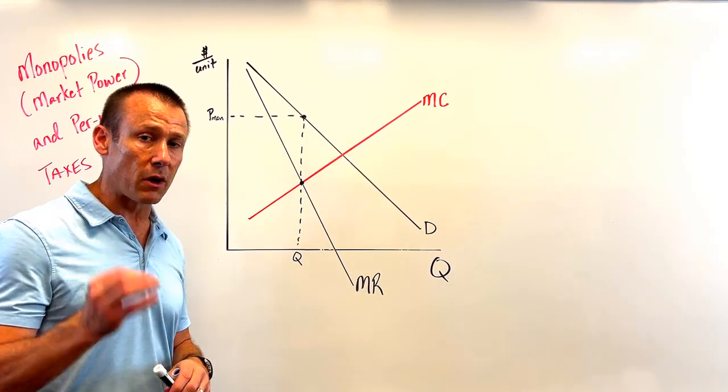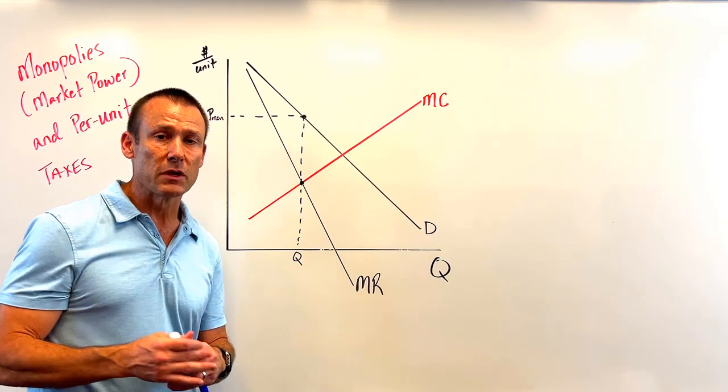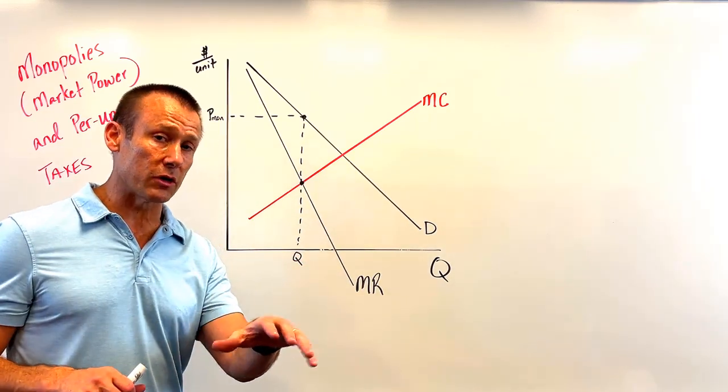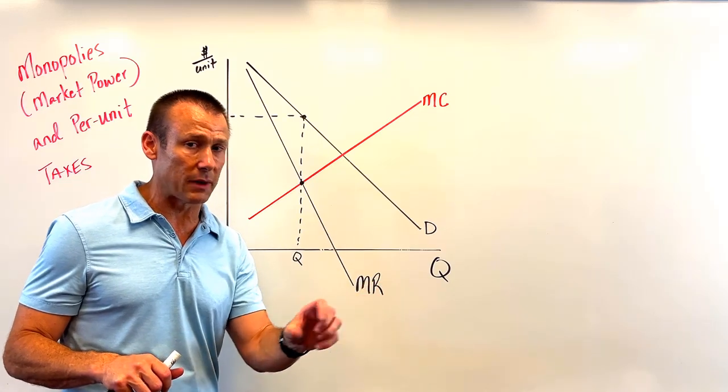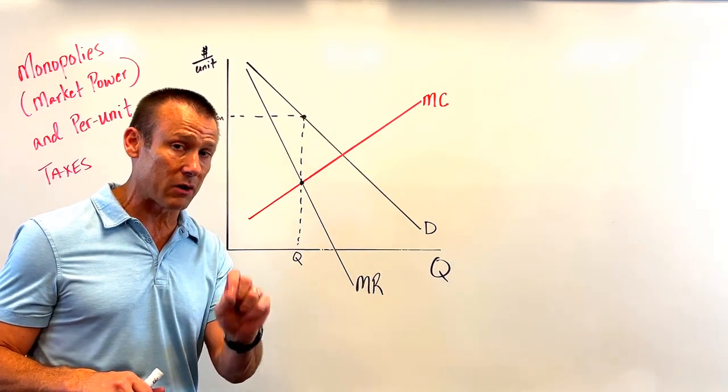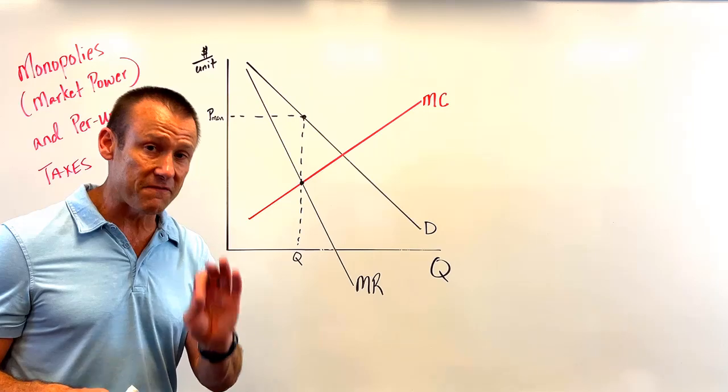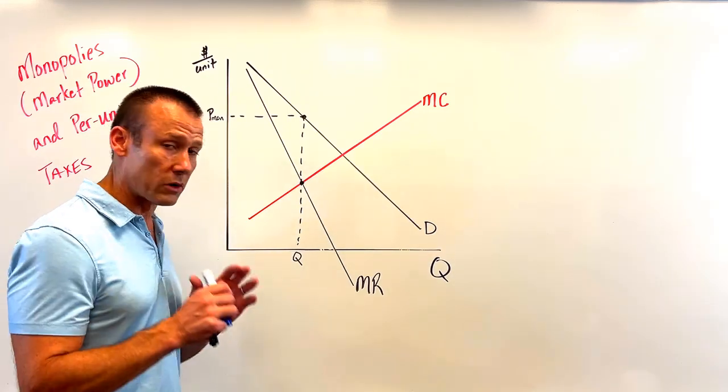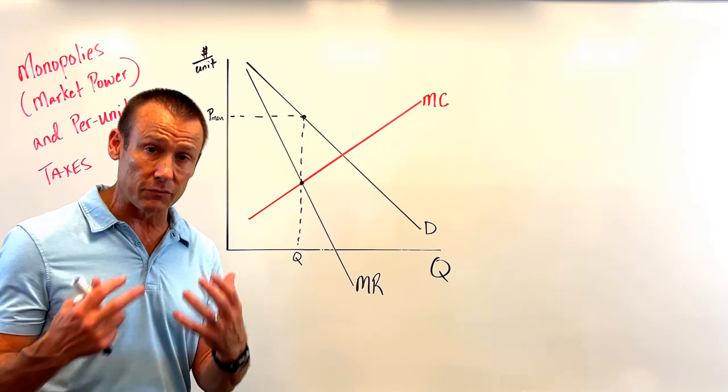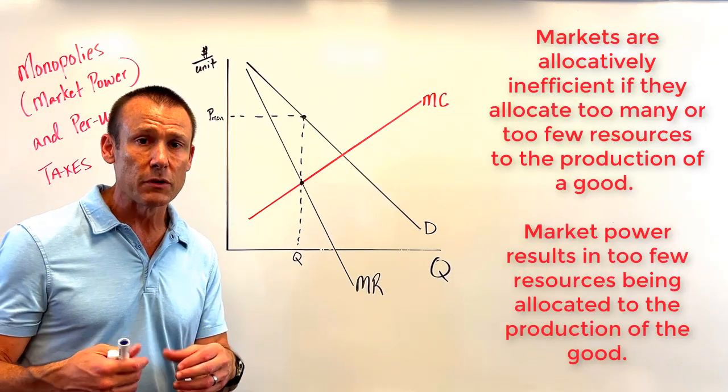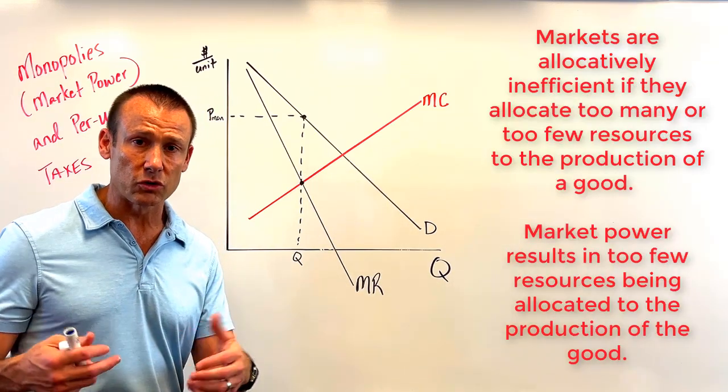Here is one of the big takeaways: when you have market power, market power is a type of market failure. If we leave market power alone—and we maybe should if the market power is not that strong, by the way—but if you have market power, if you leave it alone, we're going to fail to achieve allocative efficiency. We're going to fail to produce the amount of goods of this particular good that would provide max social surplus.